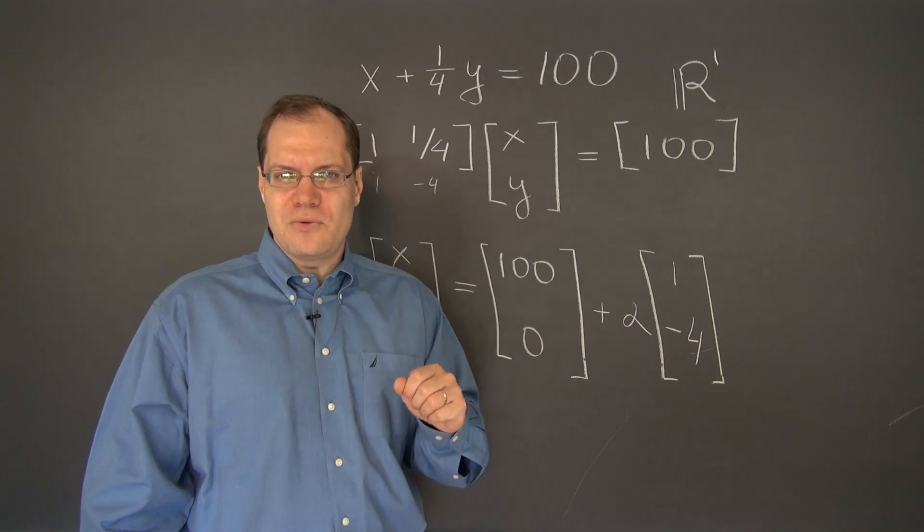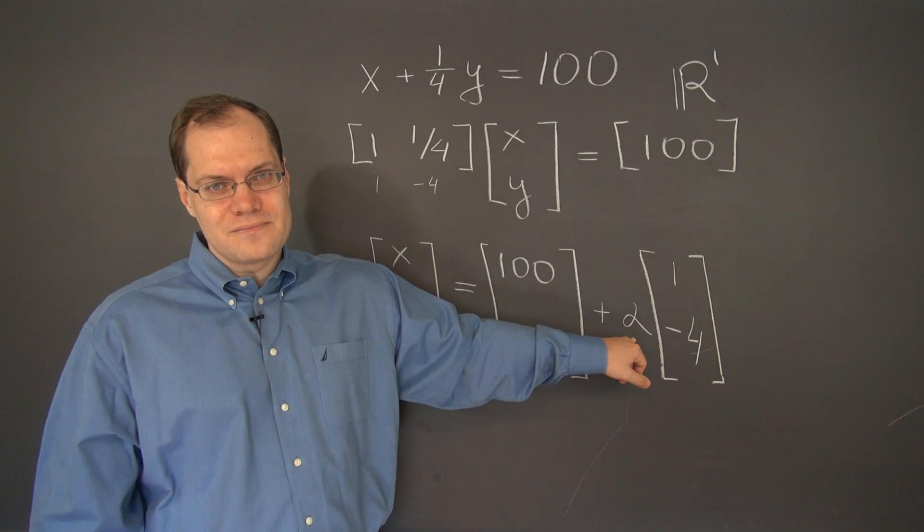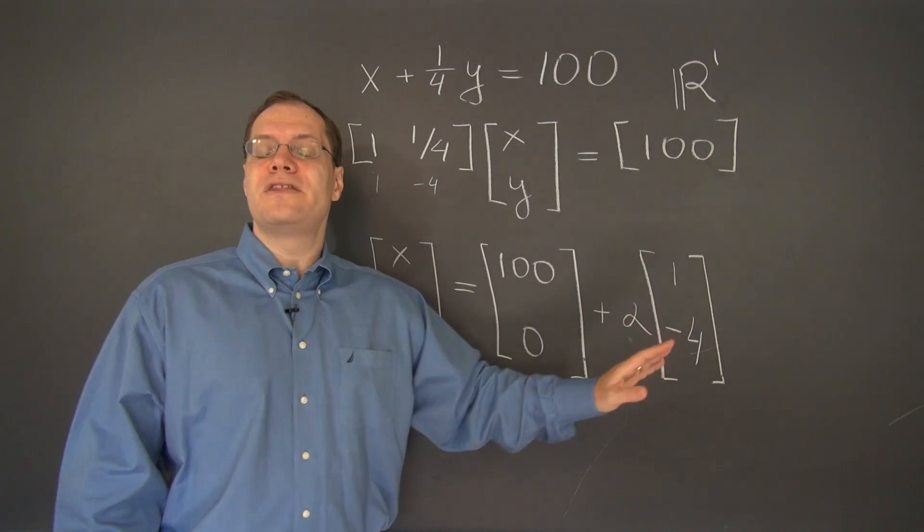Now one more, 101 and minus 4. We just have to take α equals one. And then we have 101 and minus 4. So everything works.